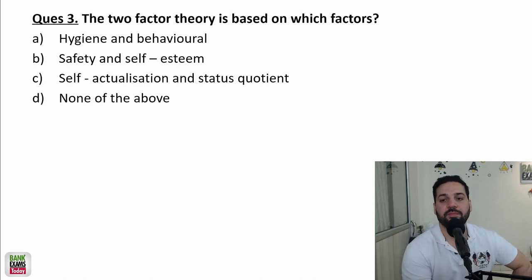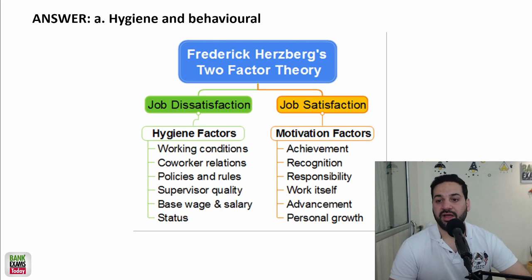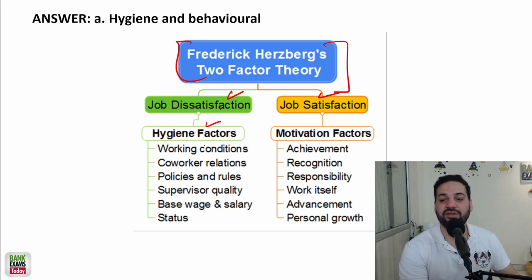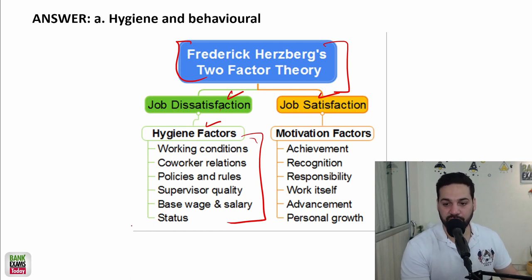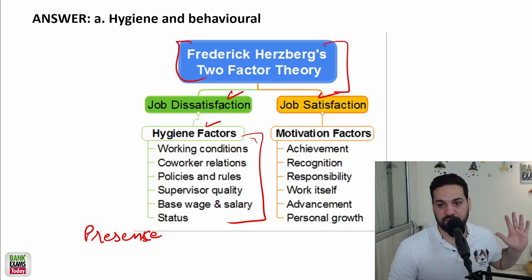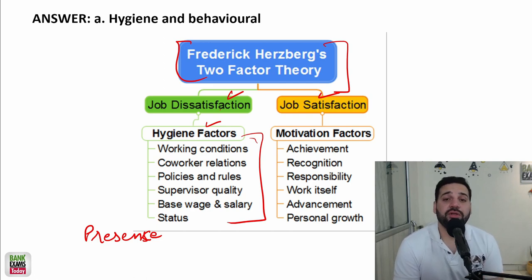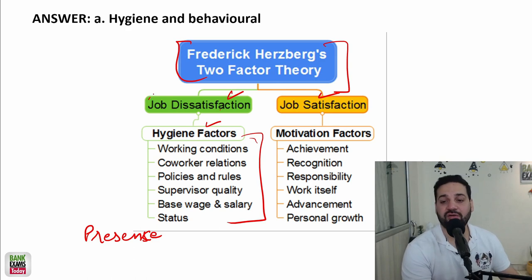The two-factor theory is based on which two factors? This is important — the two-factor theory is by Frederick Herzberg. There are two factors that can motivate you to work in an organization: satisfiers and dissatisfiers. Dissatisfiers are also known as hygiene factors. Their absence causes dissatisfaction, but their presence won't satisfy you. For example, if working conditions are good that won't motivate you, but if conditions are bad or you don't get your salary on time, that will demotivate you. These are job dissatisfiers or hygiene factors.